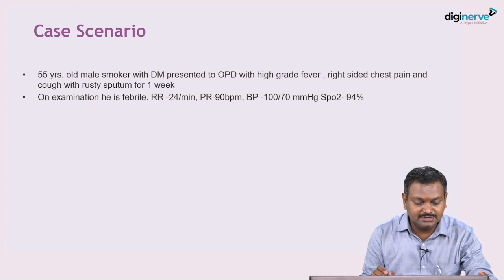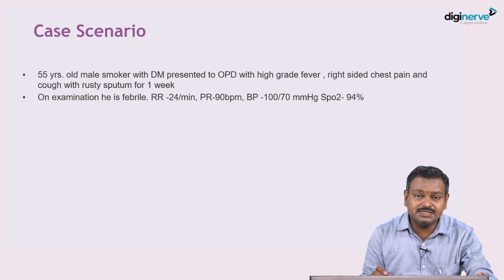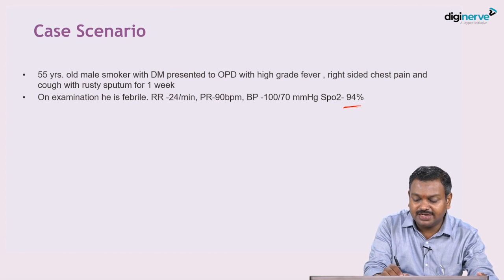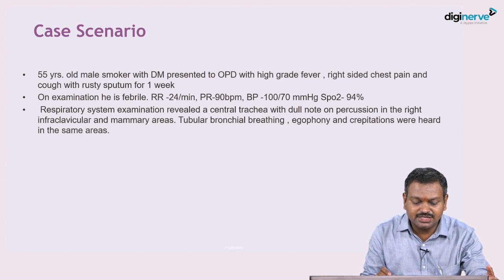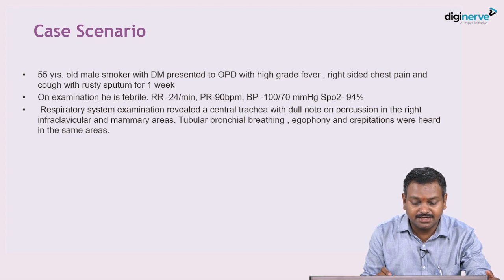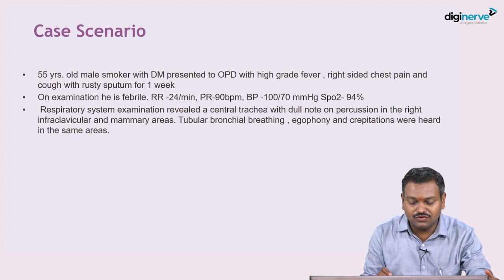On examination, the patient is febrile with mild tachypnea — respiratory rate of 24 per minute, pulse rate 90, BP slightly low, and oxygen saturation around 94%. On respiratory system examination, the trachea is central, there is a dull note on percussion in the right infraclavicular and mammary area, with tubular bronchial breathing, egophony, and crepitations heard in the same areas.